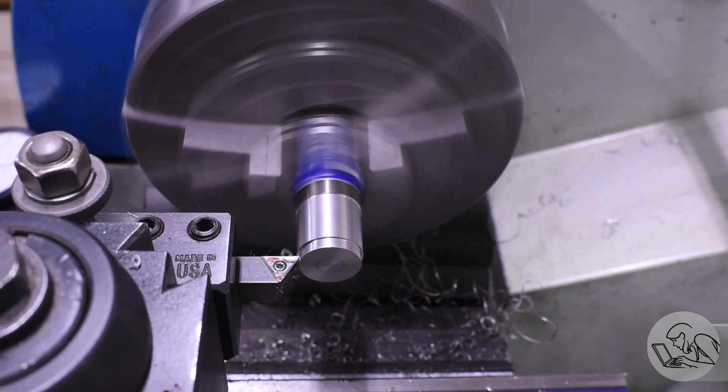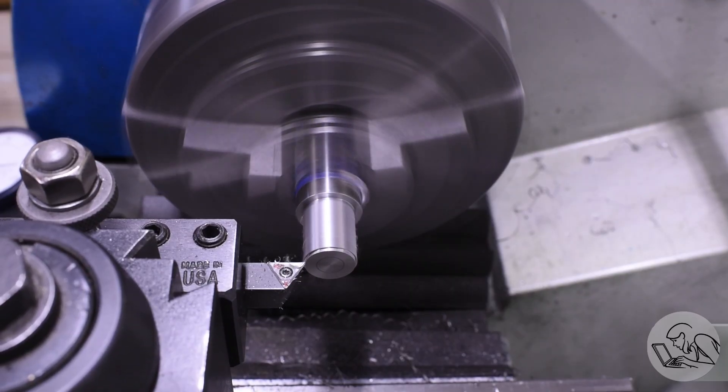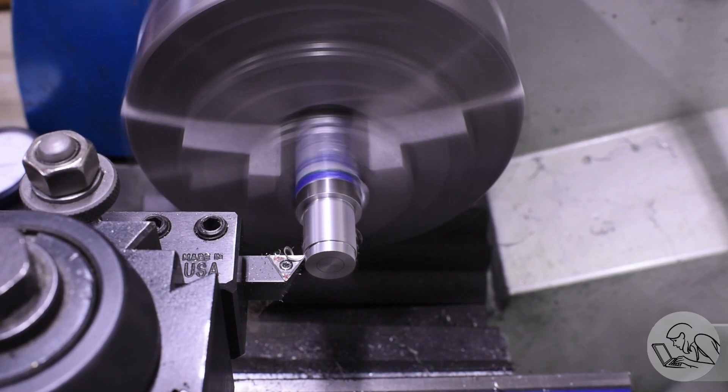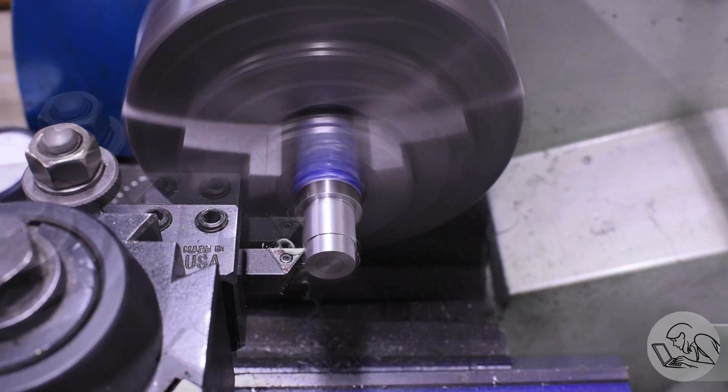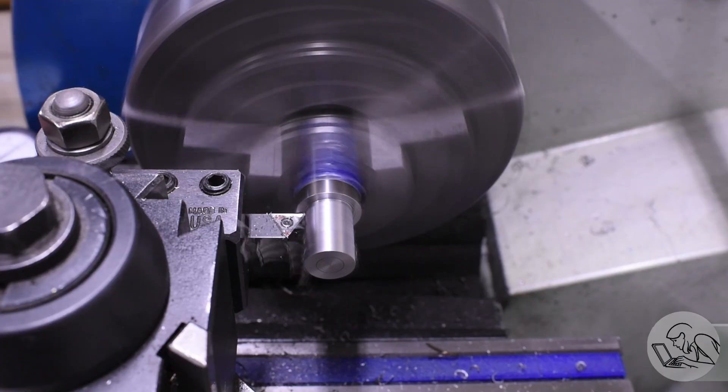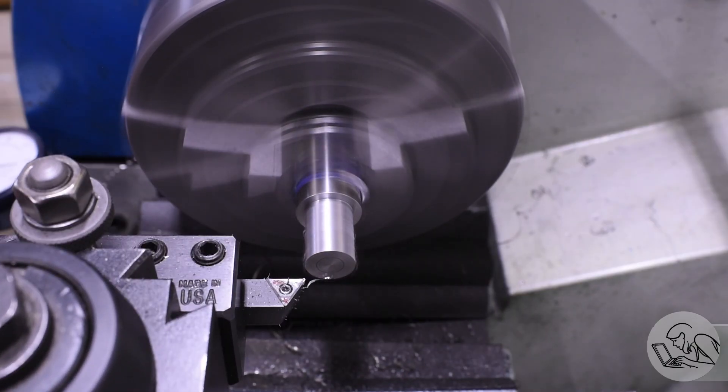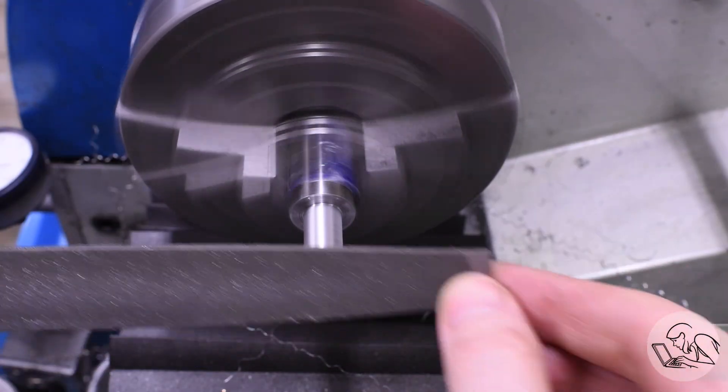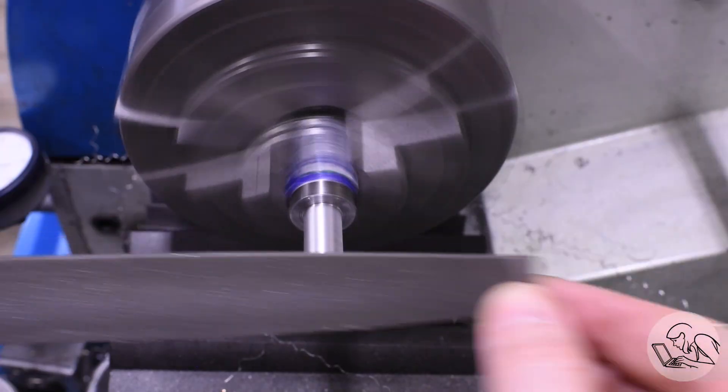Another key driver of order of operations decisions is work holding. What you see me doing here is turning down the diameter at the end of this stock. That's in preparation for putting the square end on the end of the chuck key.